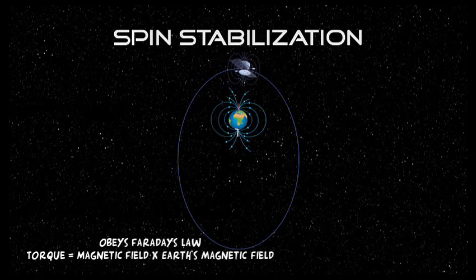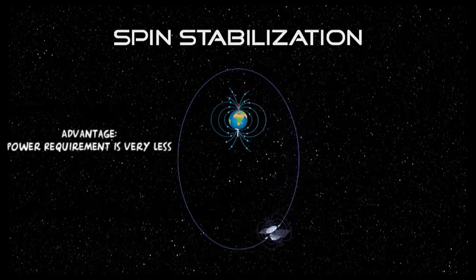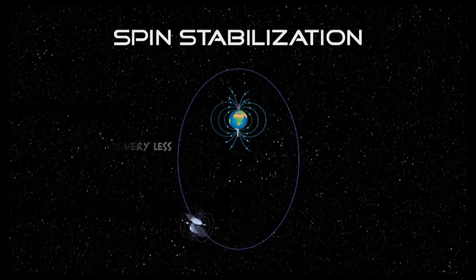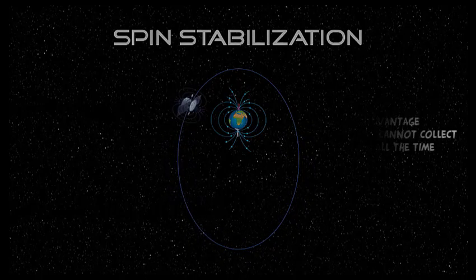Spinning can be achieved using Faraday's law. When the satellite's rod's magnetic field interacts with Earth's magnetic field, the rod begins to spin. An advantage of spin stabilization is that it requires very little power. But the disadvantage is that the solar panels cannot collect all the power all the time.